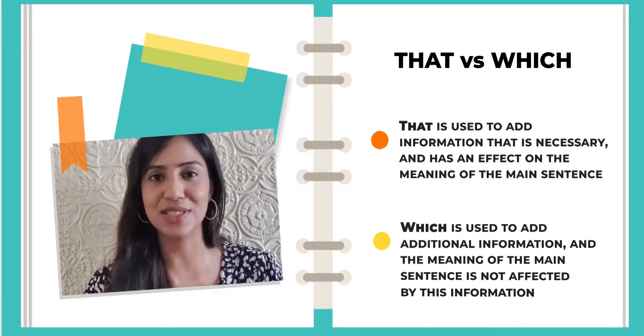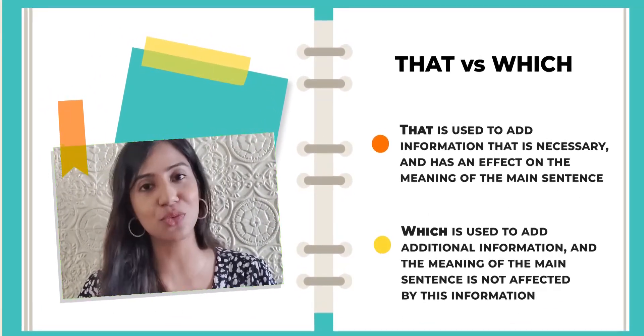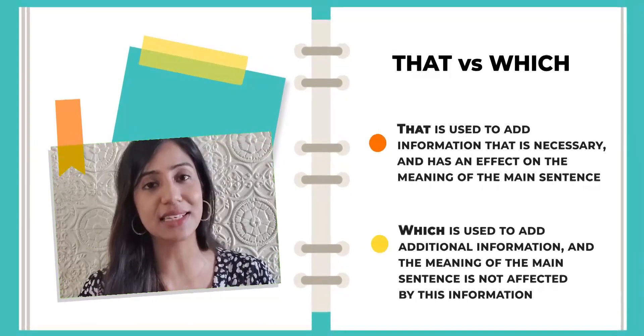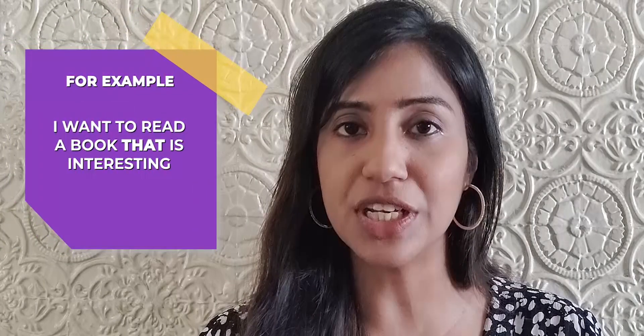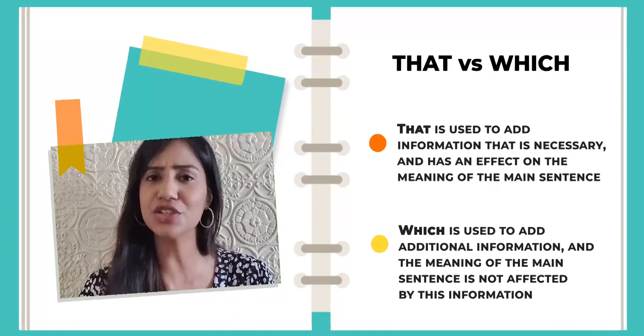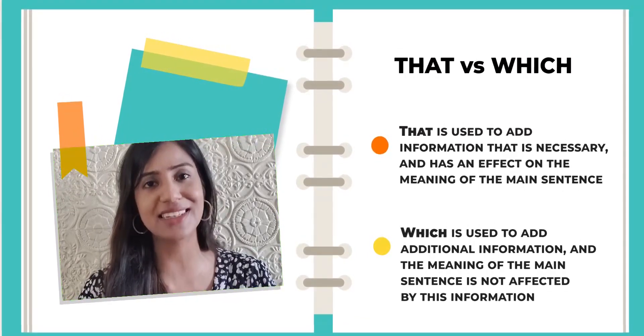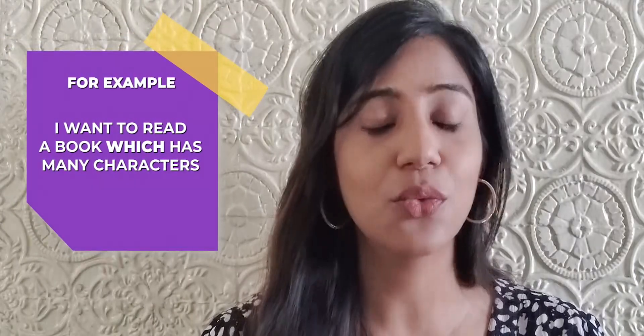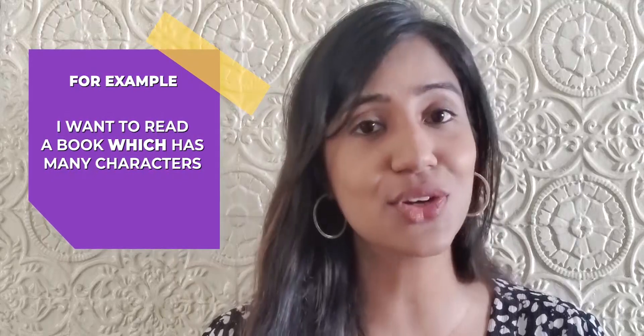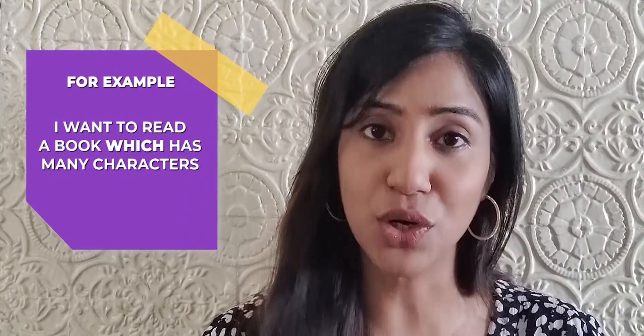Number 9: that versus which. That is always used to add information that is necessary and essential to the sentence. For example: I want to read a book that is interesting — this means I don't want to read just any book, I only want to read the book that is interesting. Which, on the other hand, is used to add additional information, and if you remove this information the sentence remains the same. For example: I want to read a book which has many characters — it does not change the fact that I want to read the book.